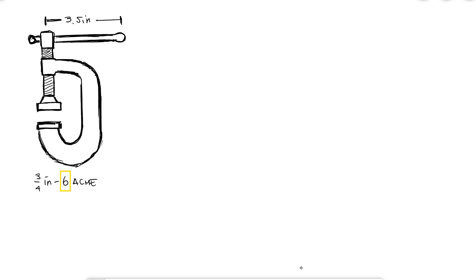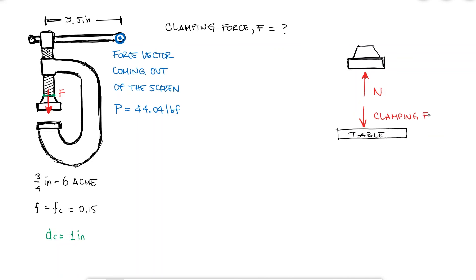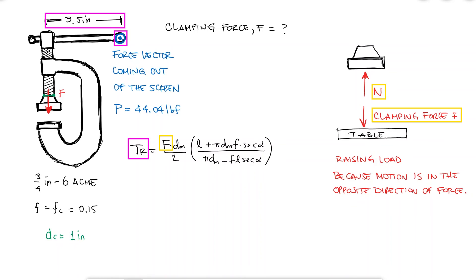Let's look at a quick example where we use these expressions. For a c-clamp with a handle of 3.5 inches and a screw that is a 3 fourths of an inch dash 6 acme thread, meaning single threaded and 6 threads per inch, and friction coefficients for the screw and the collar of 0.15, I would like to know the maximum clamping force if the maximum force at the handle can be 44.04 pounds. We will assume a friction diameter of 1 inch for the collar. I know that the clamping force, as I'm pushing down on a table by rotating the handle, is equivalent to raising a load of magnitude f. The clamping force would just be equal to the normal reaction of the table to the c-clamp. Therefore, I can use the expression we derived for raising the load. I know that if there are 6 threads per inch, the pitch would be equal to 1 sixth of an inch, and if the screw is single threaded, the lead would be equal to the pitch.